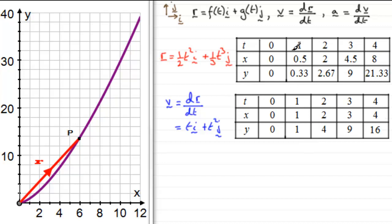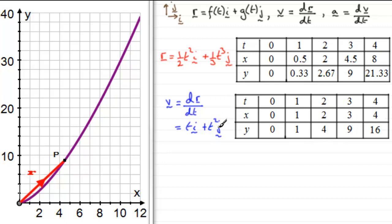By taking values of t from 0 to 4, we can build up a table of velocity values. You can check the various values of t and substitute them in to get the x and y components. Moving the particle to the point when t equals 3, we can see the velocity is 3 in the i direction plus 9 units in the j direction.